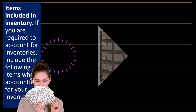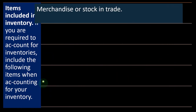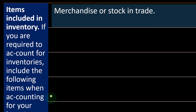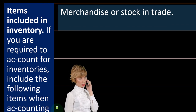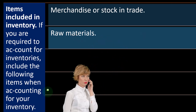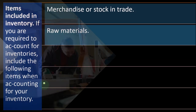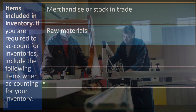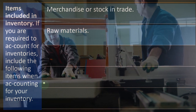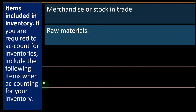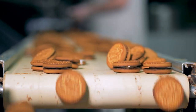Items included in inventory: if you are required to account for inventories, include the following items. First, merchandiser stock and trade — if you just buy and sell goods, the things you're buying and planning to sell are inventory. Second, raw materials — if you're manufacturing, you buy raw materials, start working on them through a job cost or process cost system, moving through work-in-process, where raw materials are combined with overhead and labor, as the middle step of the manufacturing process.